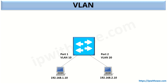Here we can see we have a layer 2 switch, and connected to it on port 1 we have one host, and another is connected on port number 2. Port 1's connected device is on VLAN 10 while port 2's connected device is on VLAN 20. Since they are on a layer 2 switch and part of different VLANs, communication between these devices will not be possible.